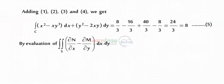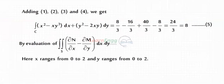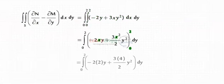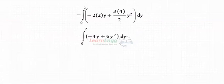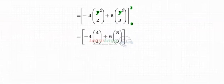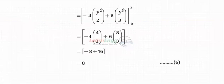By evaluation of the right-hand side in Green's Theorem, the double integral of (∂N/∂x minus ∂M/∂y) dx dy, where x ranges from 0 to 2 and y ranges from 0 to 2, the double integral of (∂N/∂x minus ∂M/∂y) dx dy equals 8.